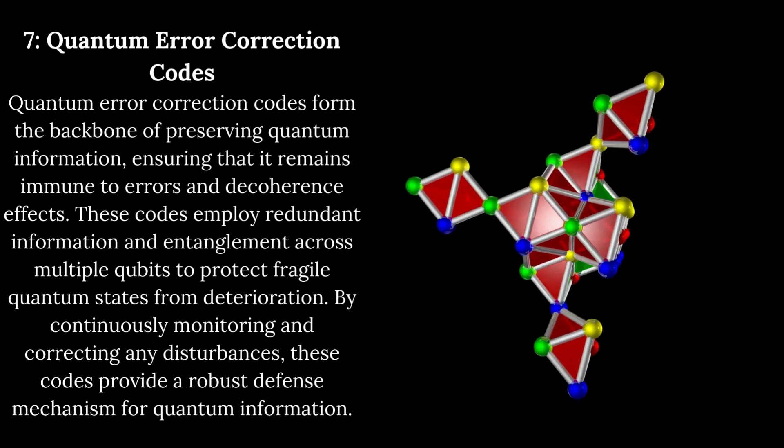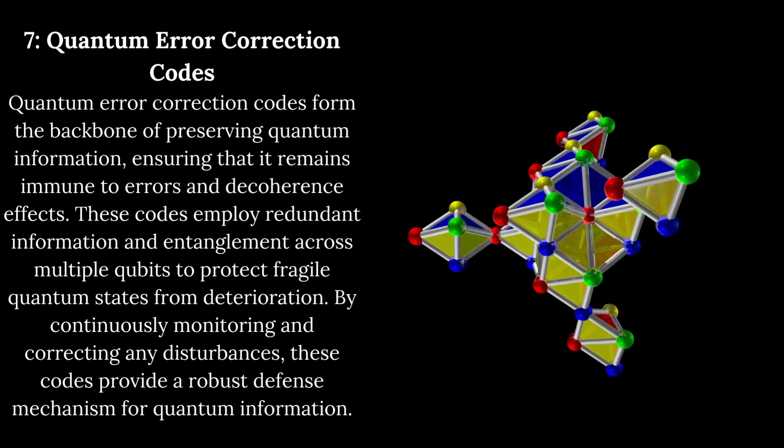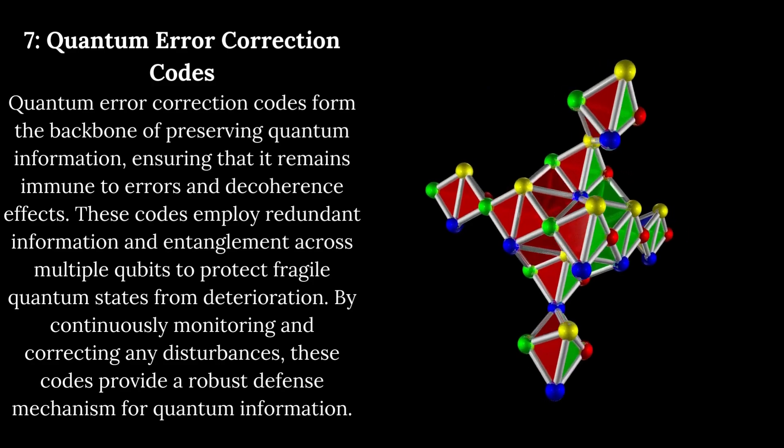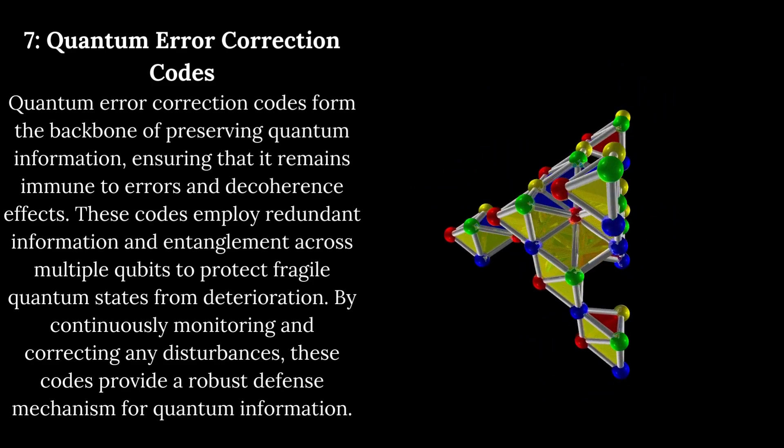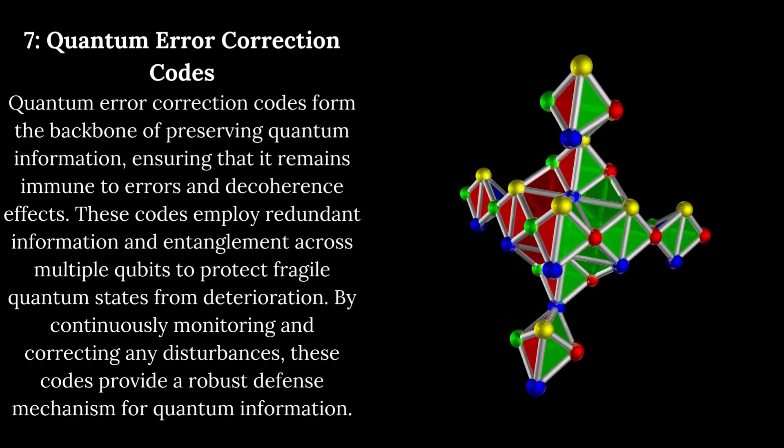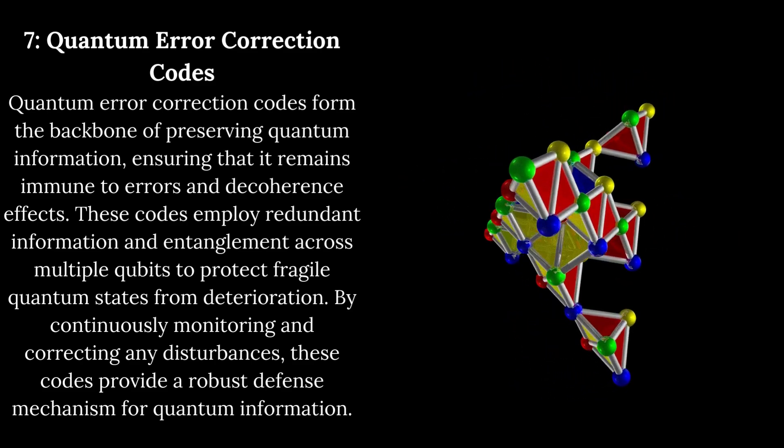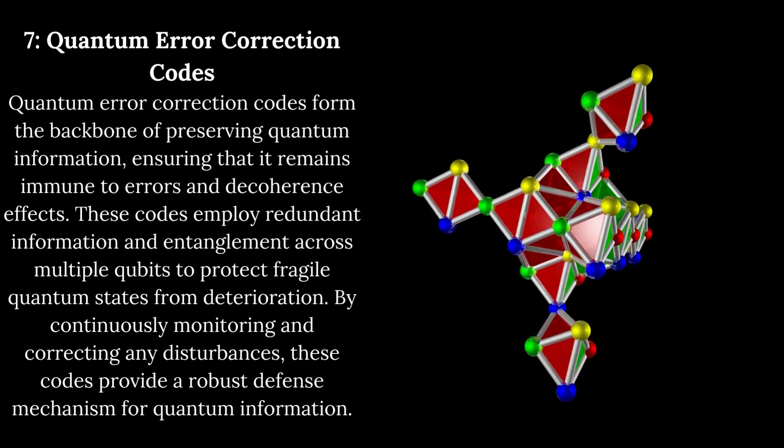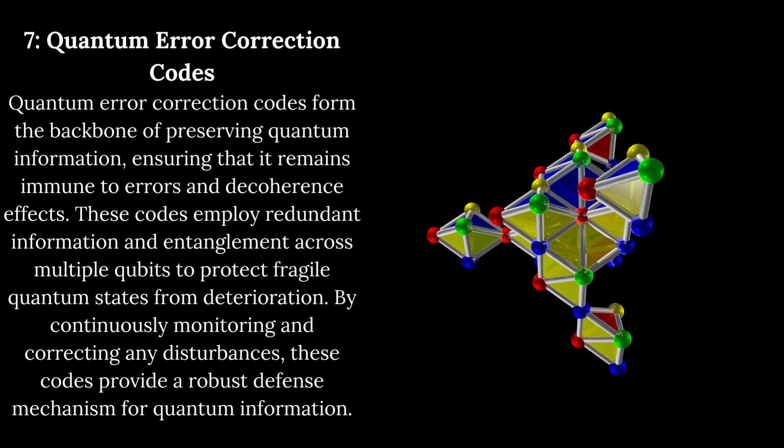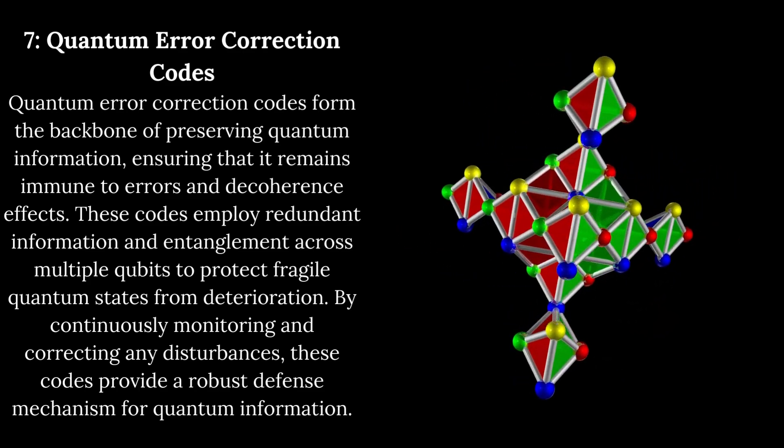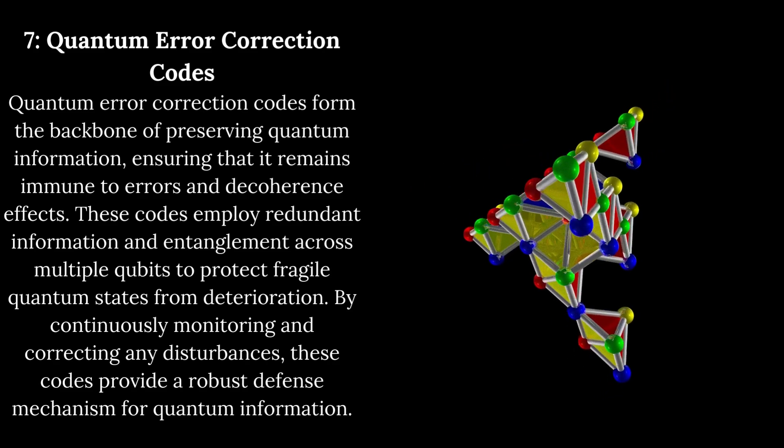Quantum Error Correction Codes. Quantum error correction codes form the backbone of preserving quantum information, ensuring that it remains immune to errors and decoherence effects. These codes employ redundant information and entanglement across multiple qubits to protect fragile quantum states from deterioration. By continuously monitoring and correcting any disturbances, these codes provide a robust defense mechanism for quantum information.